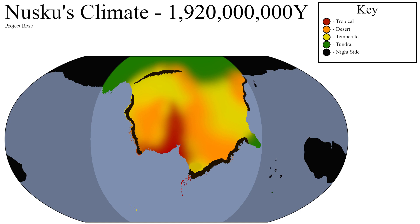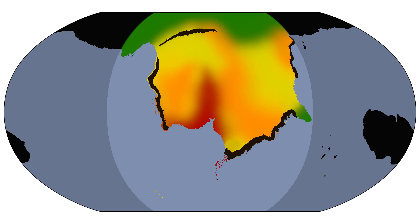Temperate areas are basically everywhere else that isn't too far from the subsolar point. Tundras are at the far reaches of the daylight side, and a permanent ice cap forms the majority of the night side of the planet, along with a few areas creeping onto the day side. The time period during and directly after the Proto-Nuskuen extinction is a much cooler time period, so the tundra and ice caps are a lot larger than usual, and the sea levels are slightly lower. Keep in mind that this climate model is still far from perfect, but it's quite an upgrade from the very vague one we had earlier.